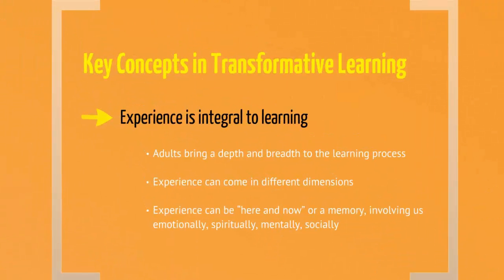Here are some of the key concepts in transformative learning. First, our experience and that rich reservoir of biography that you bring to the experience is integral to how the learning will unfold for you. Adults tend to bring a real depth and breadth to this kind of learning process, because they have to situate it in their own personal lives. Experience can be in the here and now, or it could be a memory involving us emotionally, spiritually, mentally, and socially. So experience doesn't have to be temporal or just in the time that we're in right now. An example might be if you had a bad learning experience in the past, or if you got bitten by an animal and decided you just never will like that kind of animal — that would be experiencing from our past.